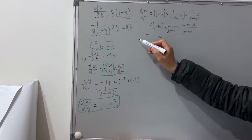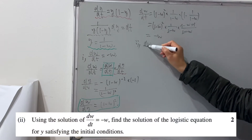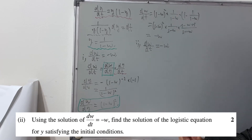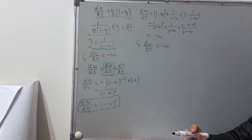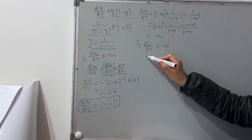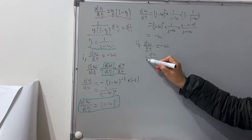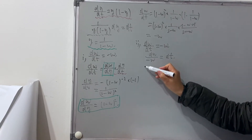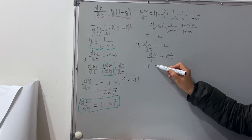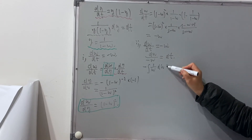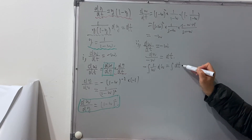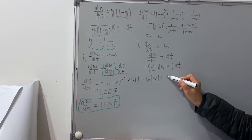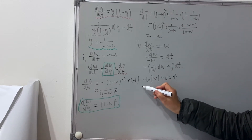For the second part, we use the new differential equation dw/dt equals negative w to find w in terms of t. We integrate by separating w and t: dw over negative w equals dt. Integrating both sides, 1 over w dw equals dt, which gives us negative log|w| plus c equals t.